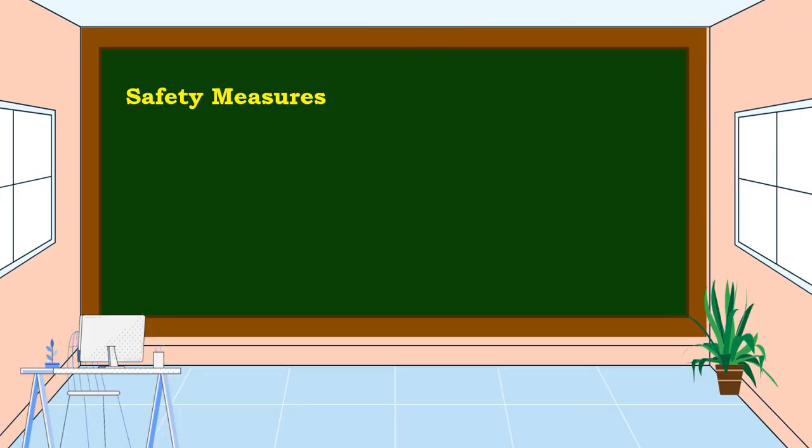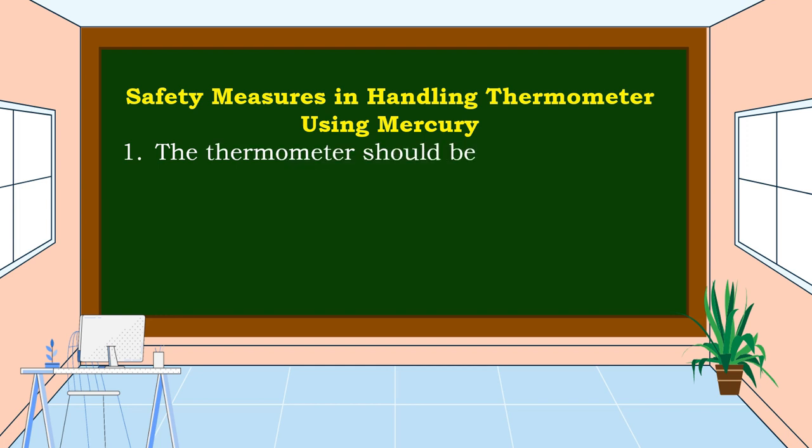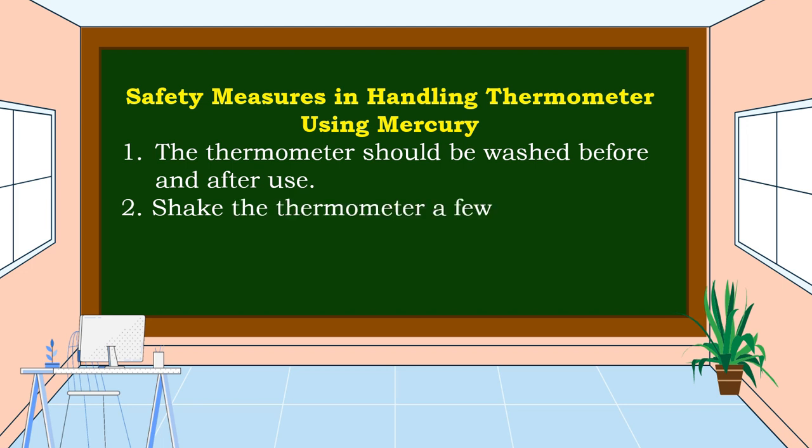Safety measures in handling a thermometer using mercury. Number one: the thermometer should be washed before and after use. Number two: shake the thermometer a few times to bring the level of mercury down.